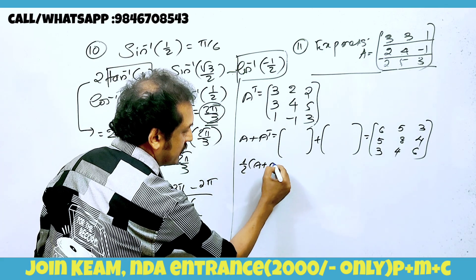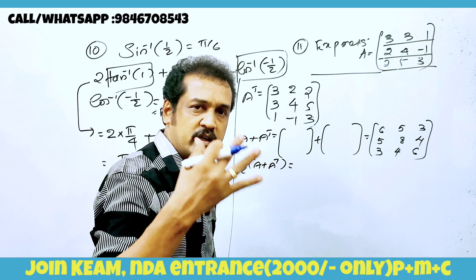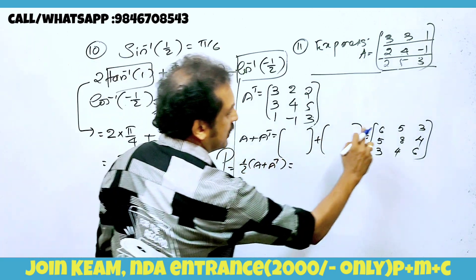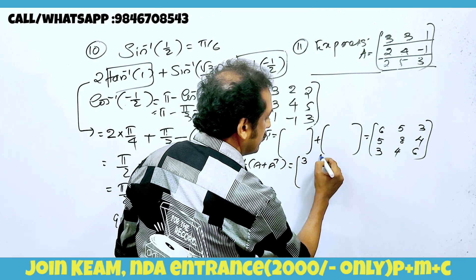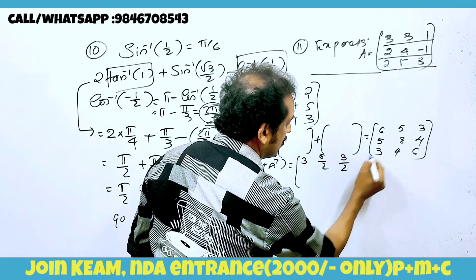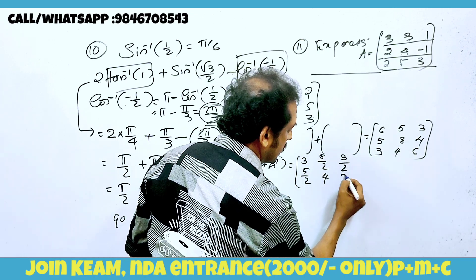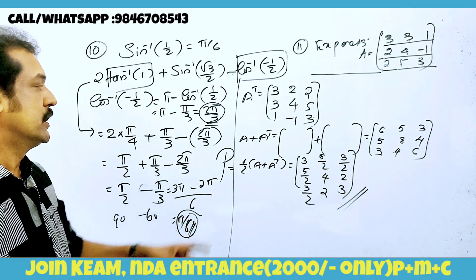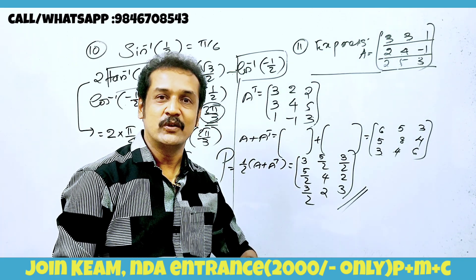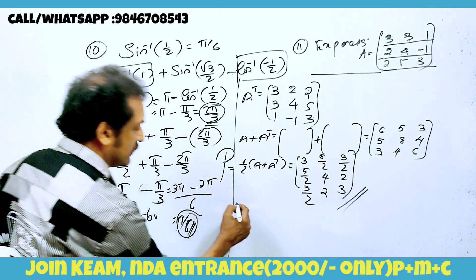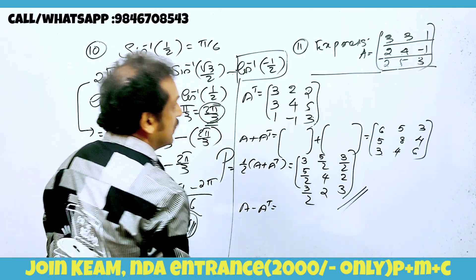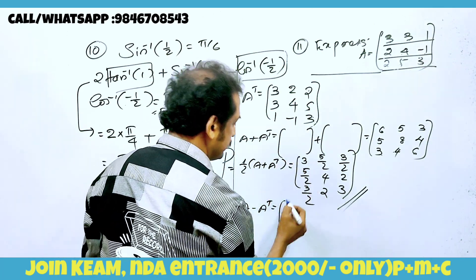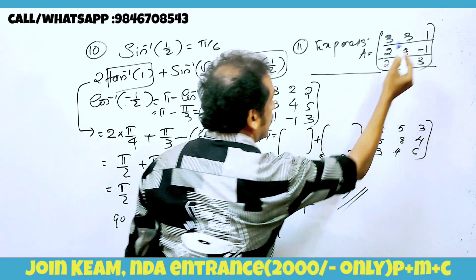The symmetric part is ½(A + Aᵀ). We divide the resulting matrix by 2. So ½(A + Aᵀ) gives entries: 6/2=3, 5/2, 3/2 in respective positions, continuing element by element to form the symmetric matrix.